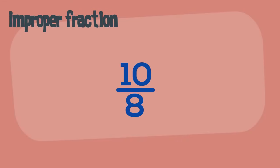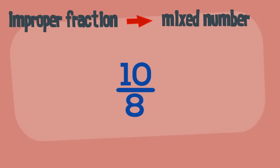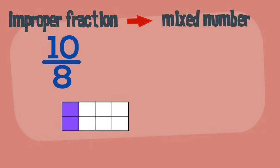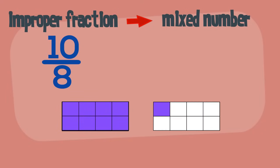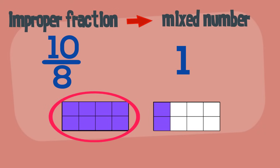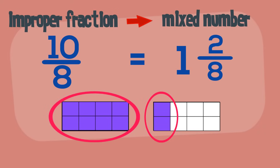Here's another improper fraction. Let's convert this improper fraction to a mixed number. We are working with eighths. Our fraction has ten of them. One eighth, two eighths, three eighths, four eighths, five eighths, six eighths, seven eighths, eight eighths — eight eighths is one whole. Nine eighths, ten eighths. There is one whole and two eighths. The mixed number is one and two eighths.